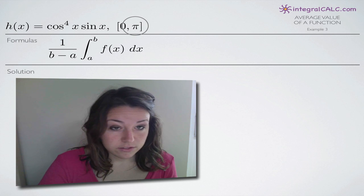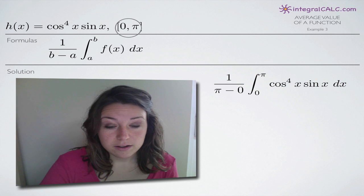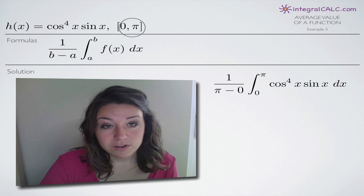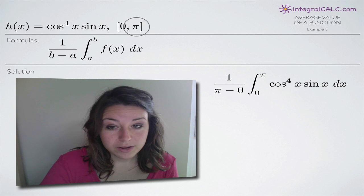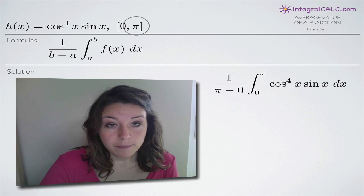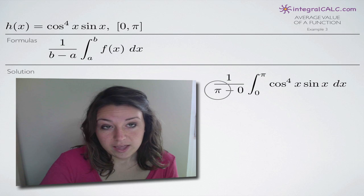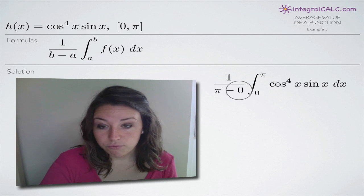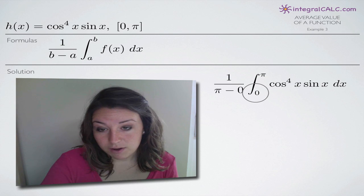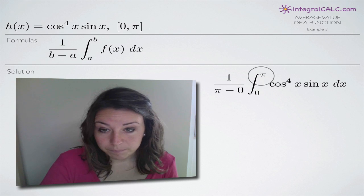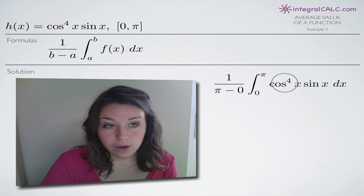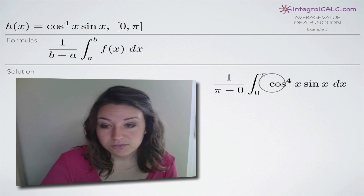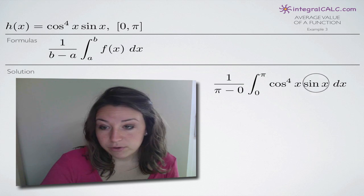The first thing that we're going to do is plug in our limits of integration zero and pi. We're plugging in pi for b and zero for a, and then we also plug them in as our limits of integration, and we take our function h of x and put it into the integral.